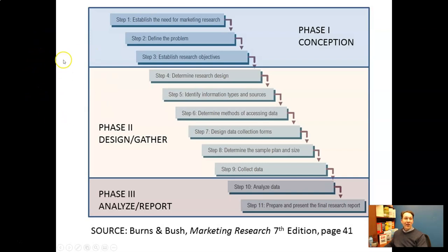This is the framework for planning marketing research that comes from a textbook I used when teaching undergraduate research at SIUE, Burns and Bush's Marketing Research, 7th edition. I like this framework. It breaks everything down into 11 steps, but I have further divided it into three phases.